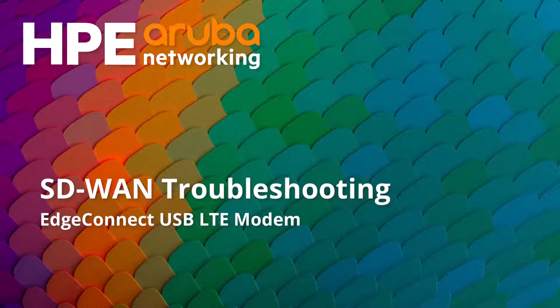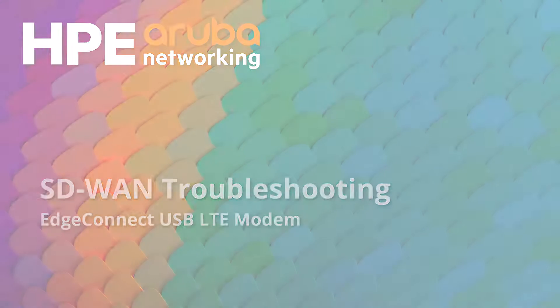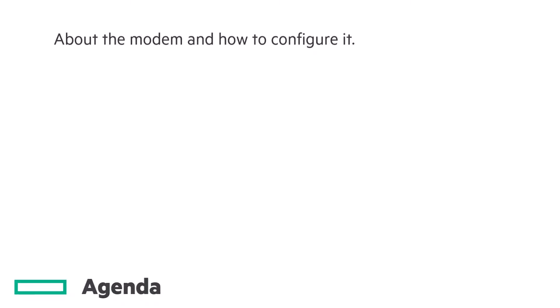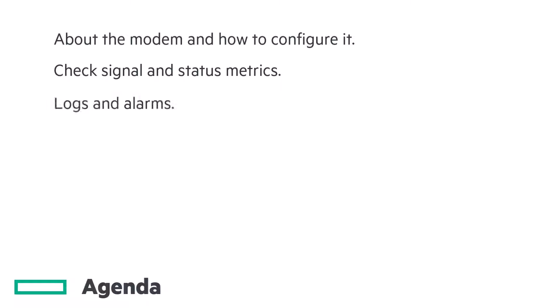In this video we'll talk about the USB LTE modem for EdgeConnect. We will briefly cover what it is and how to configure it, see how to check the signal strength and other status metrics, examine the logs and alarms in detail, and cover the various CLI commands that can help us.